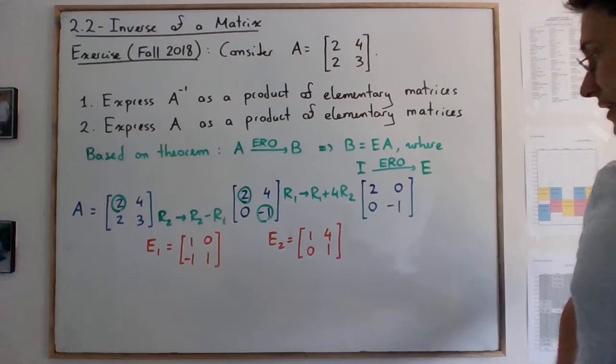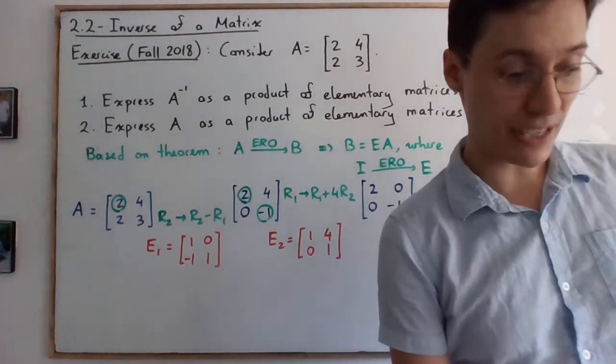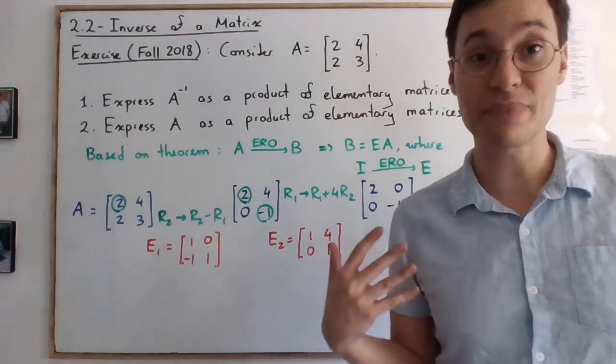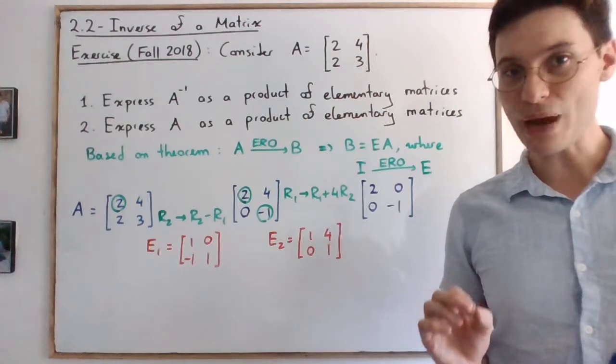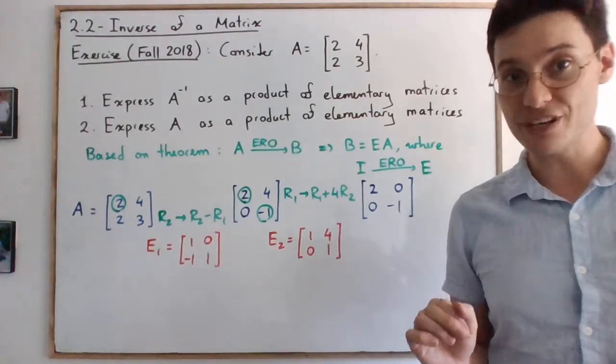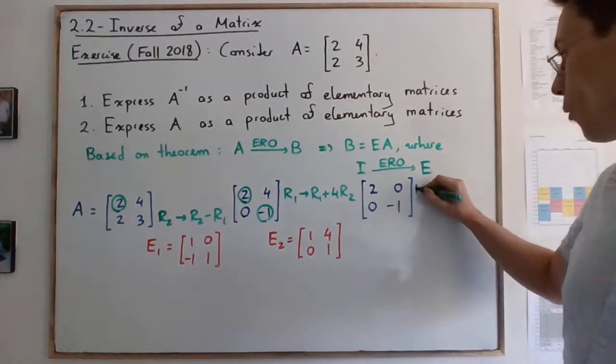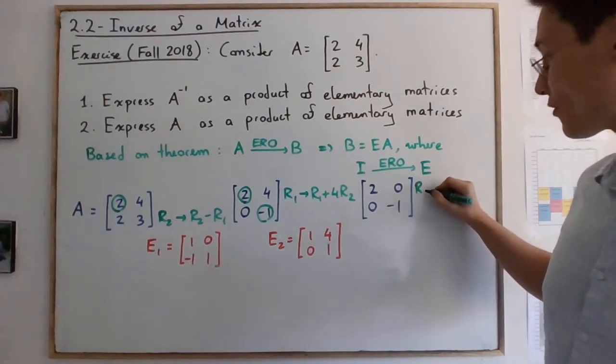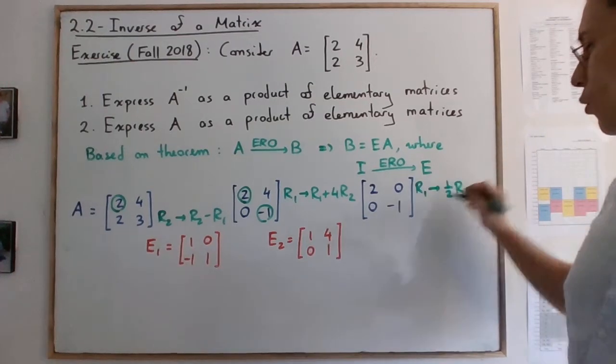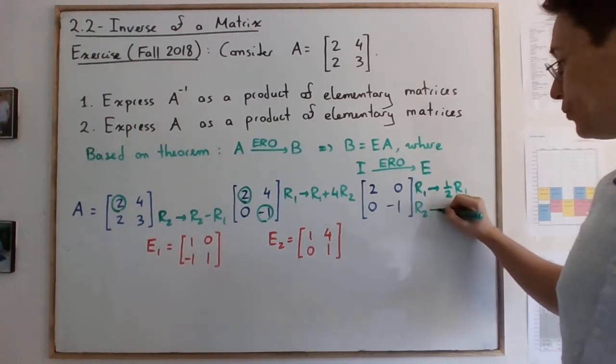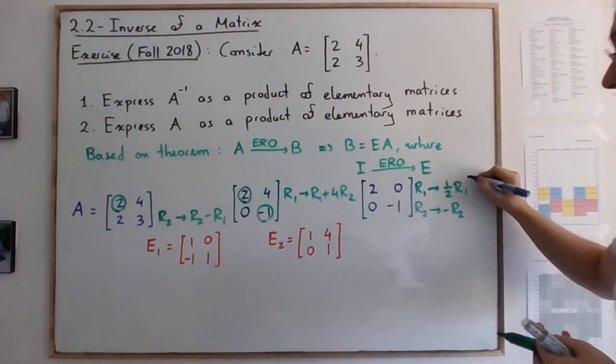All right. We're almost done. I think we can do the next two row operations at the same time. The only thing we have to be careful of is that if we do this, we need to write one elementary operation for each, right? Even if we're performing the two row operations at the same time. So here, for example, we will scale down. Row 1 is half of row 1 and row 2 is the negative of row 2. And we will get from this the identity matrix.